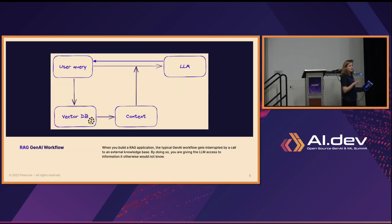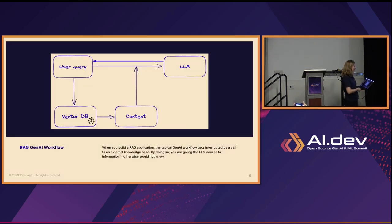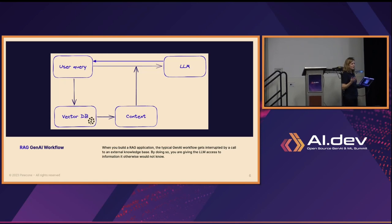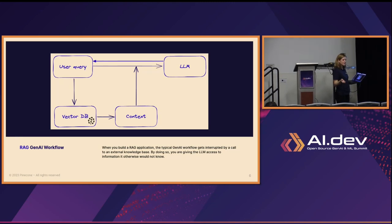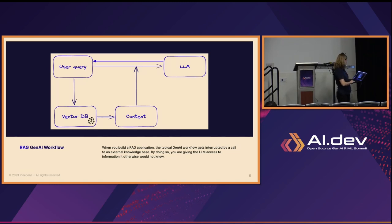When we talk about RAG — Retrieval Augmented Generation — we put two more steps in the GenAI workflow. Your user query gets routed to a vector database, hopefully Pinecone. From the vector database, you get vector search results — we call these context. Then together, the vector database results and your user query get sent to the large language model, and the LLM uses that context to answer the user.